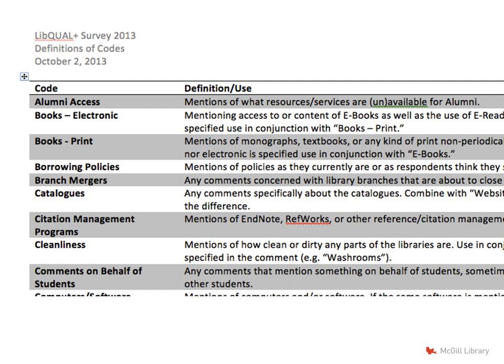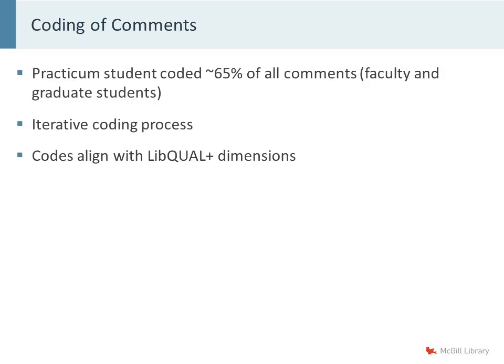Some of these codes were collapsed into larger categories, and with a few exceptions they fell within the three dimensions measured by LibQual: Libraries Place, Affective Service, and Information Control. The few exceptions were special codes — for example, comments on behalf of students, where faculty would advocate for students, and another set of comments about the LibQual survey administration itself.